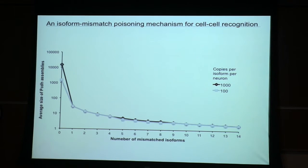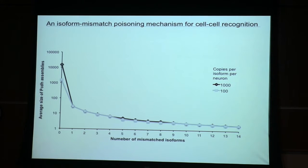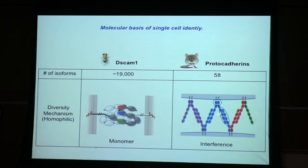The model translates into the size of the assembly formed, which we suggest affects what happens in the cytoplasm. The model is consistent with all the data — at least it explains this remarkable ability of 58 proteins to do the job of 19,000 proteins. DSCAMs function by having great molecular diversity with 19,000 proteins; we think proto-cadherins function with an interference mechanism, which allows them to generate even greater diversity. We're obviously in the process of testing these ideas.